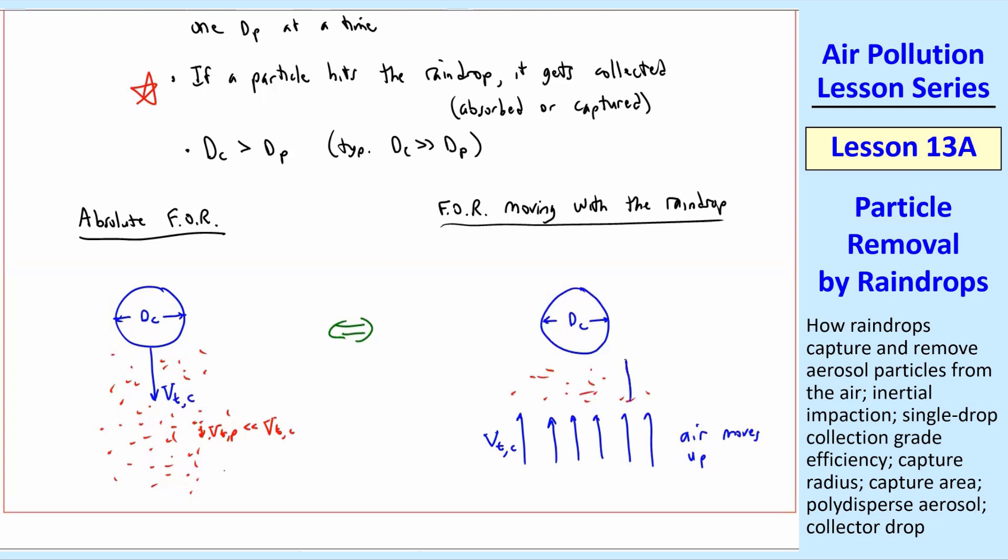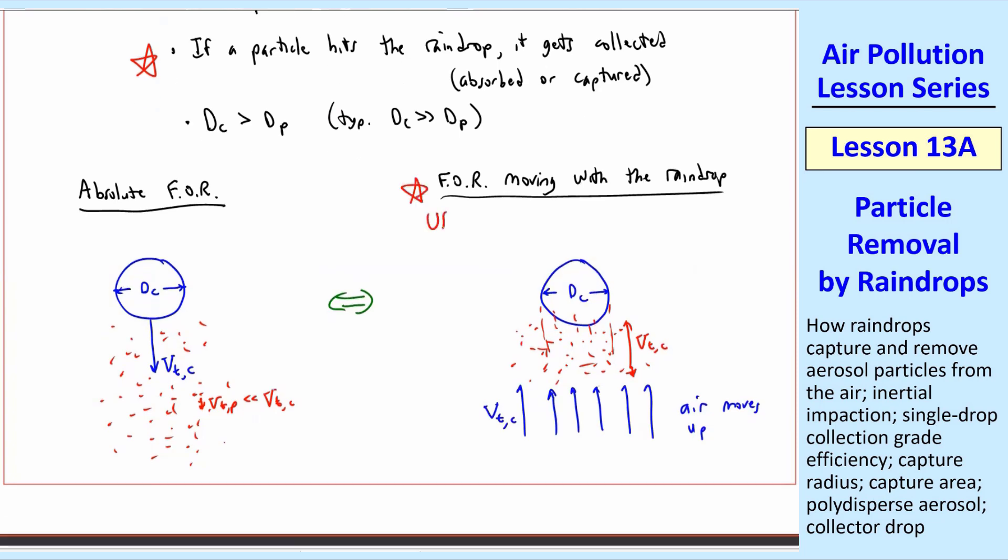And so all these particles are moving up with the air. In this frame of reference, the particles are moving up also at VTC, technically a little less than that because they're also falling due to gravity. Now some of these particles hit the drop and get absorbed, while others don't. At first glance, you might say that everything under the raindrop gets collected, but that's not true because this raindrop is a sphere, and the air has to move around it. There are air streamlines, and that's how we're going to analyze this. We're going to use this frame of reference moving with the raindrop.